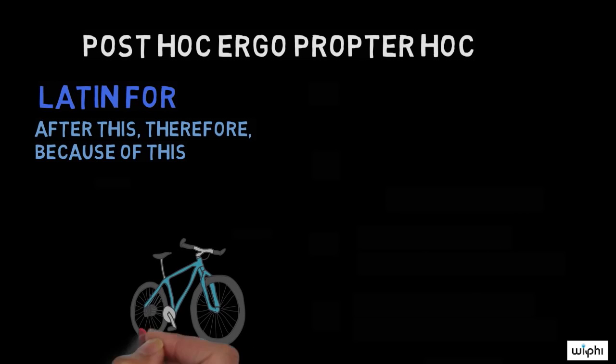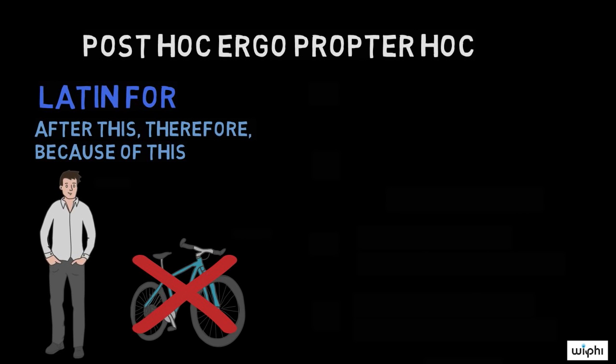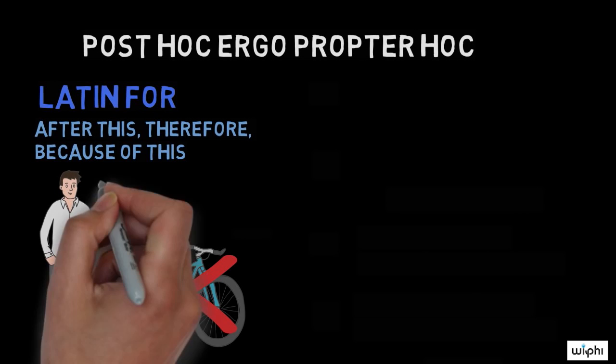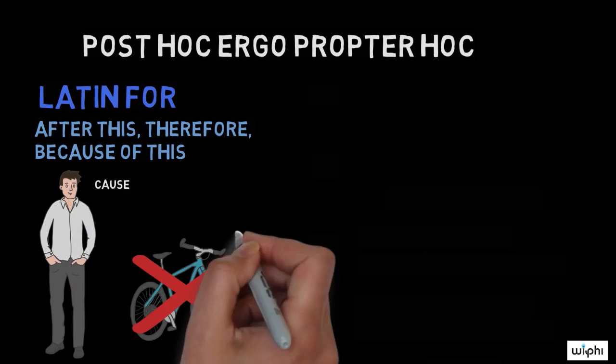Here is the idea. It's a fallacy to argue that because one event, like my bike breaking, occurred after another event, like Alex riding it, the first event caused the second event.